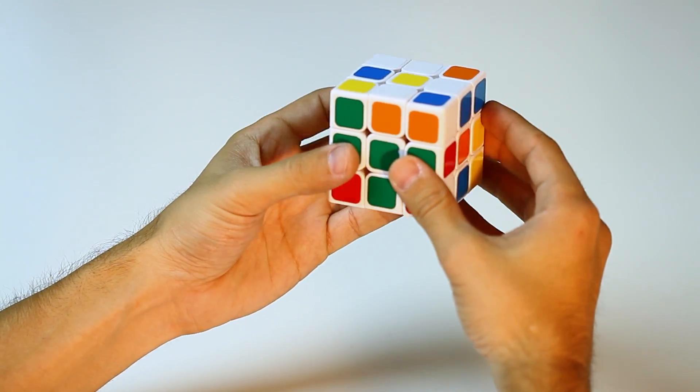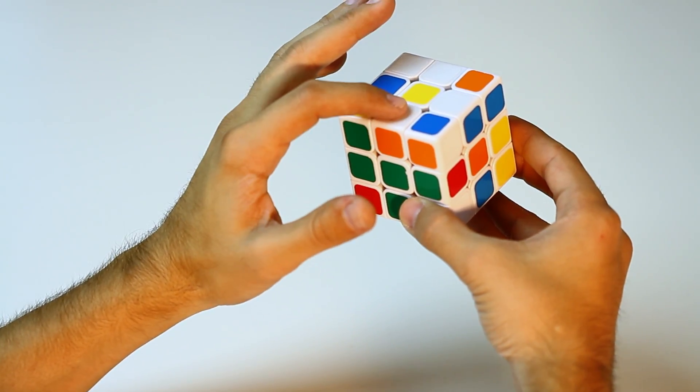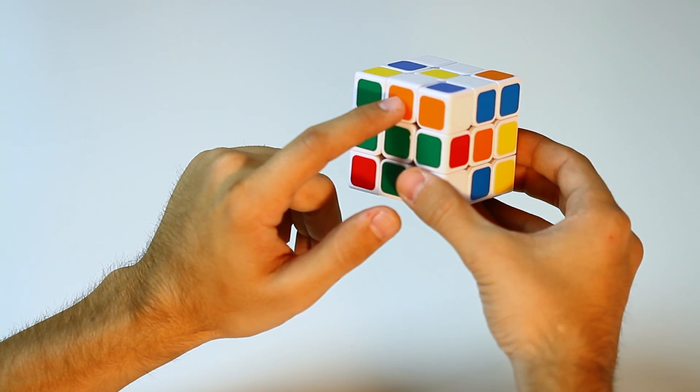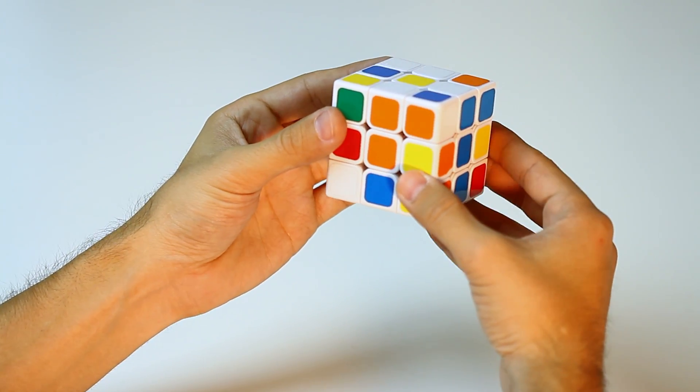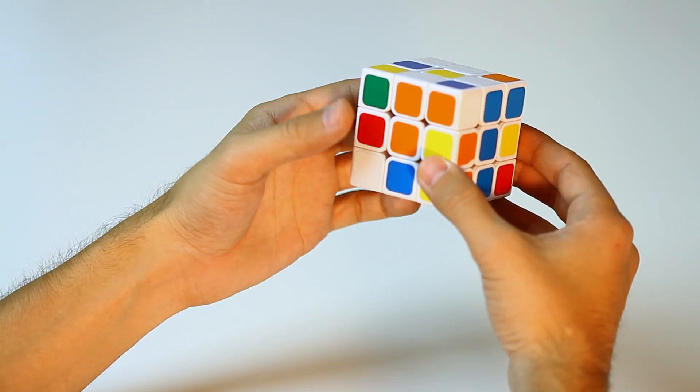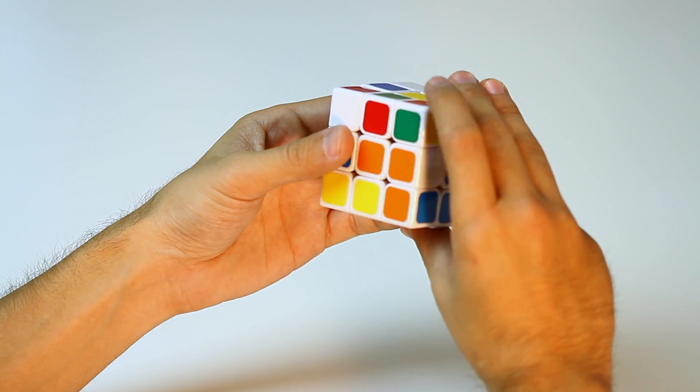All right, rotate the cube. We have a white edge piece with an orange side. So let's rotate these bottom two layers to the orange side. So white, orange, orange, rotate 180 degrees.